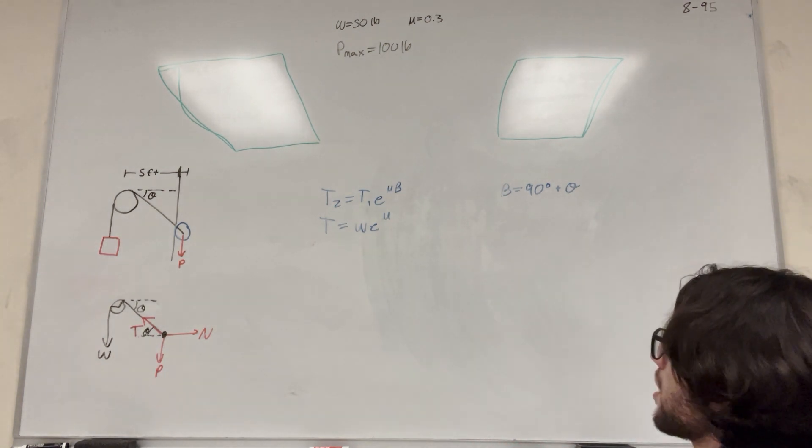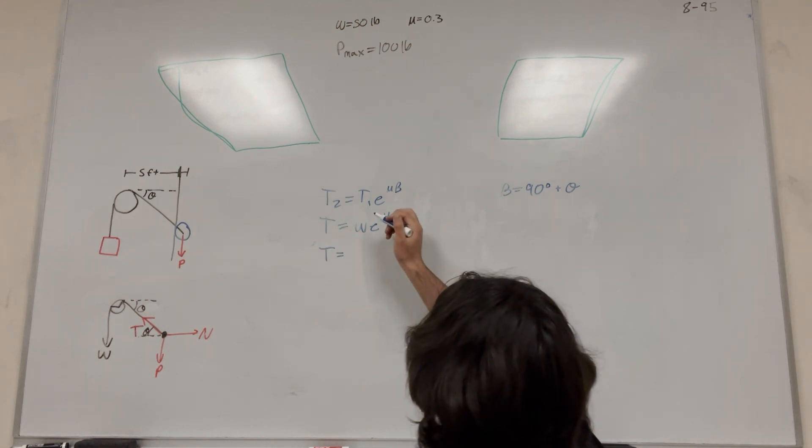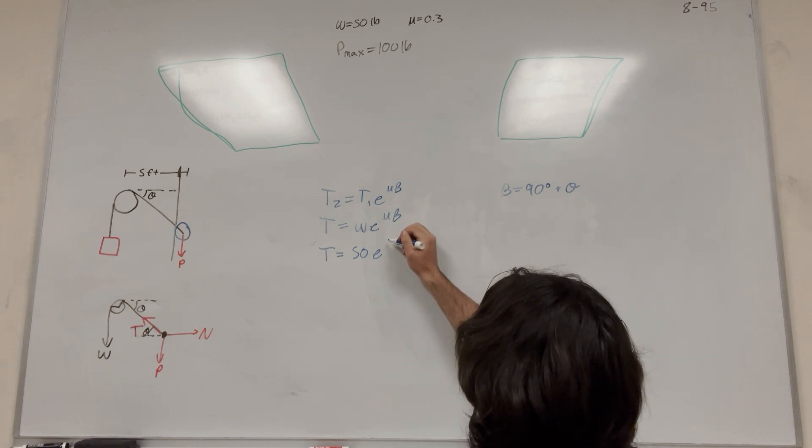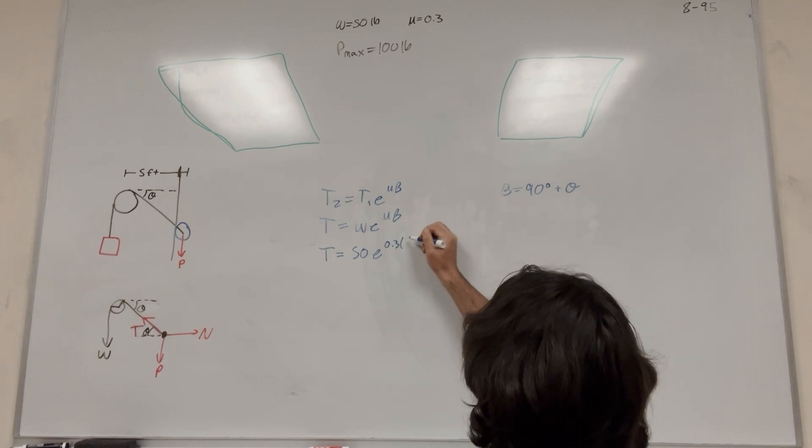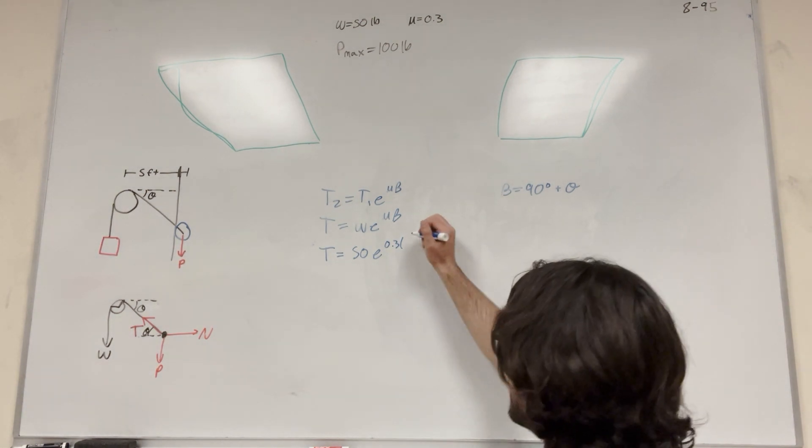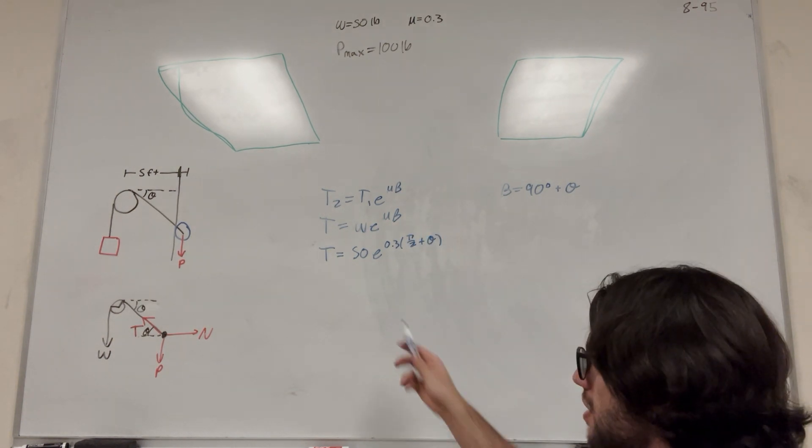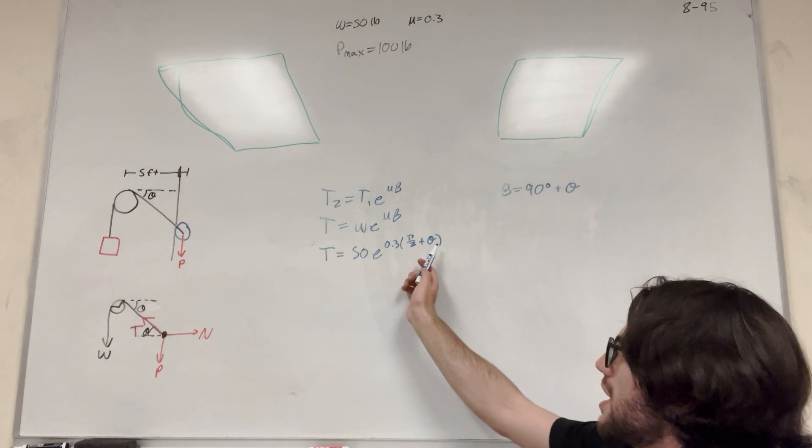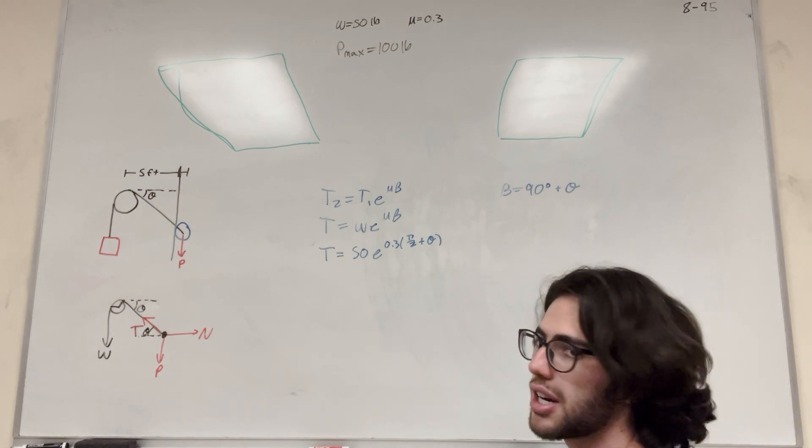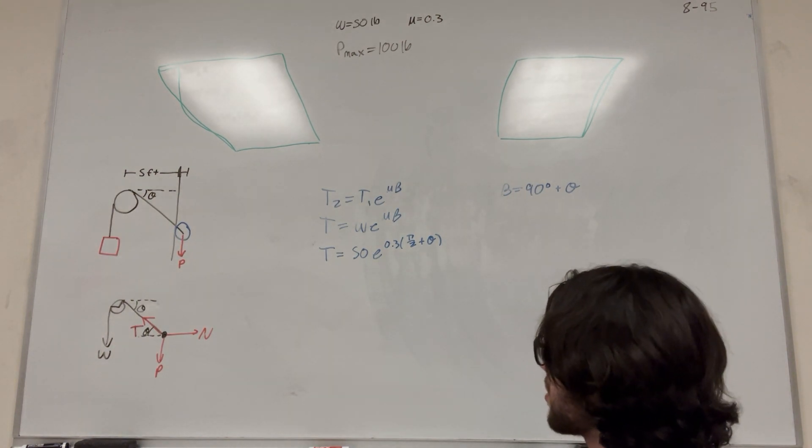So let's just go ahead and plug it into our equation here. Tension is equal to, so weight is 50 pounds, e to the 0.3, and then we need this in radians. So 90 degrees is pi over 2 radians plus theta. So in this equation we have two unknowns. We have tension and theta. So we don't know this and we don't know that. And we can't solve yet. So what we need to do is write another equation so we can have a system of equations.